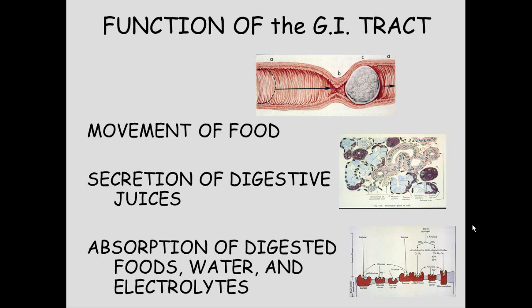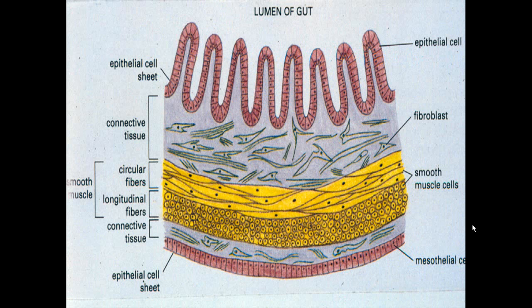Digestive juices are produced throughout the GI tract. The third function is absorption of digested foods, water, and electrolytes. Looking at a general section of the digestive tube, you can see that epithelial cells line the lumen where food would be.